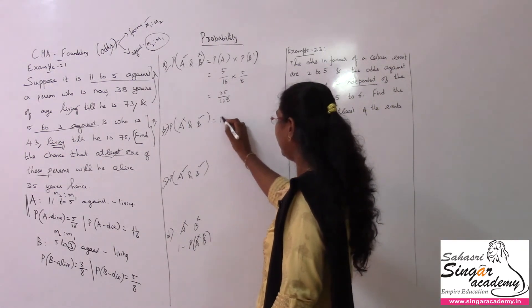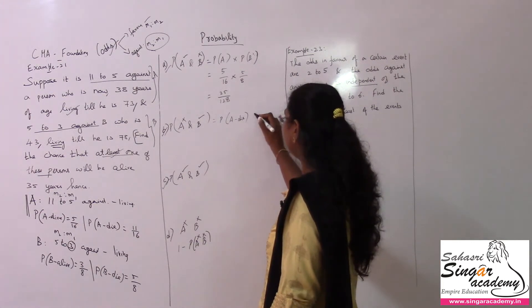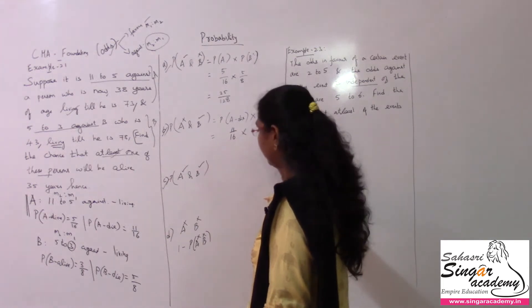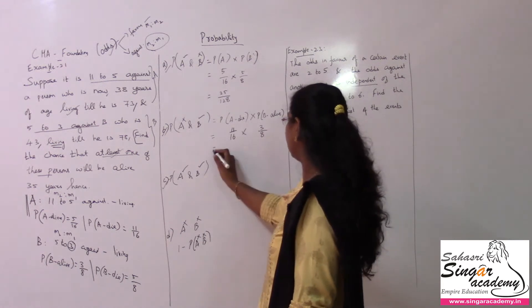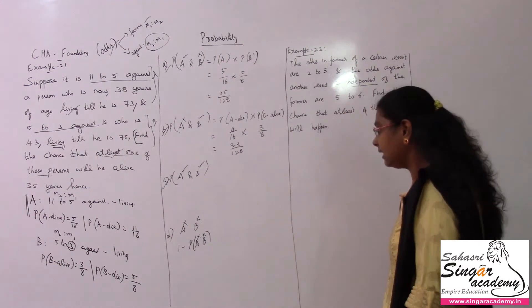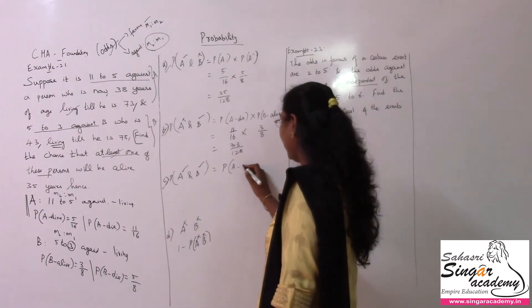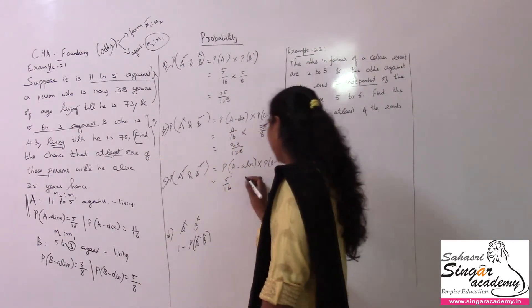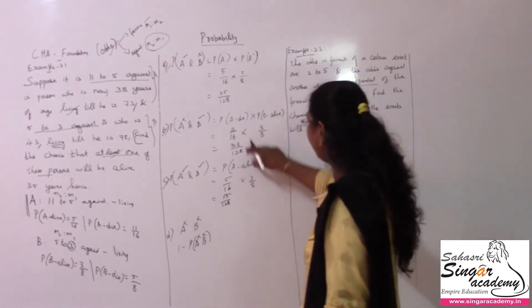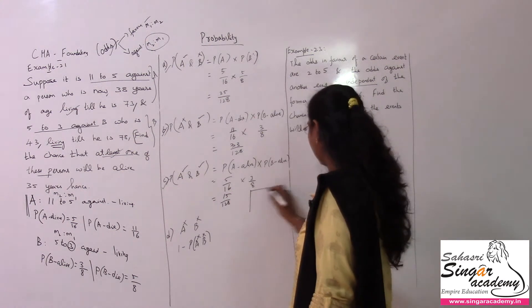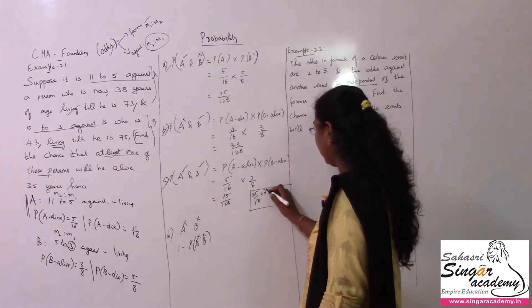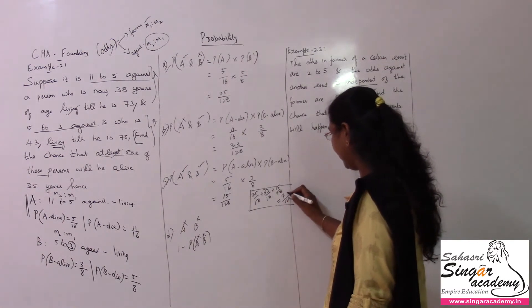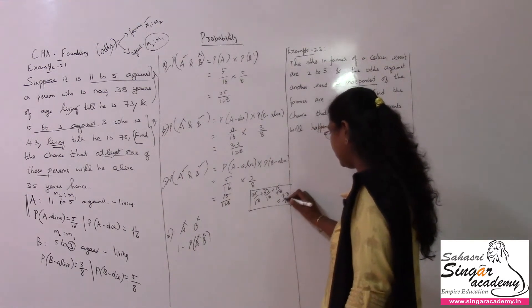Adding all three cases: 25/128 + 33/128 + 15/128 = 73/128. So the answer is 73 divided by 128.